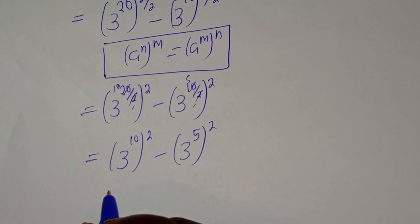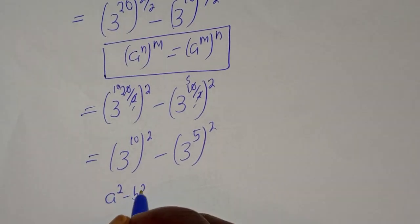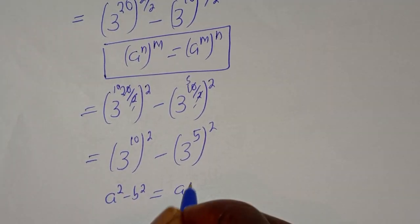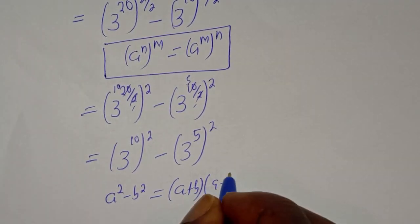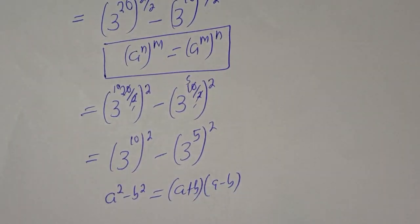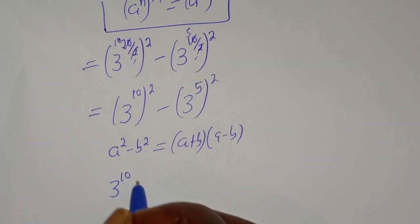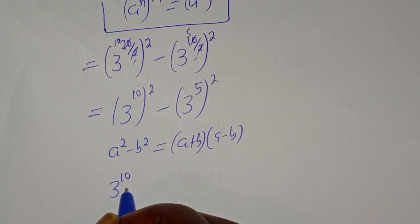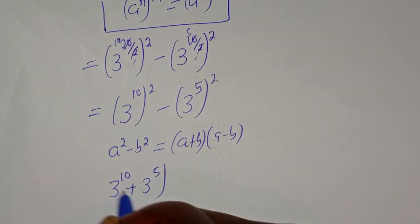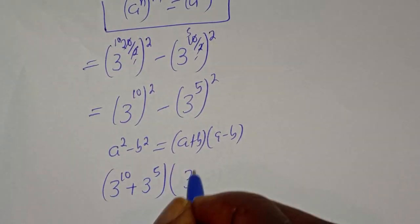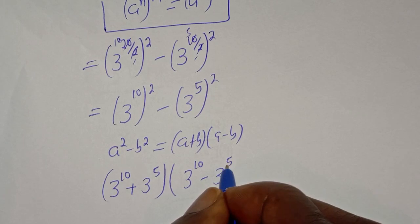So this is in the form of a perfect square. If you have a squared minus b squared, this is equal to a plus b, bracket, a minus b. Here it is: t raised to power 10 plus t raised to power 5, bracket, t raised to power 10 minus t raised to power 5.